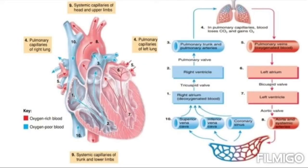The left side of the heart will pump oxygenated blood into the systemic circulation to all the tissues of the body, except the air sacs — that is, alveoli of the lungs. The right side of the heart pumps deoxygenated blood into the pulmonary circulation to the air sacs, that is, alveoli of the lungs.